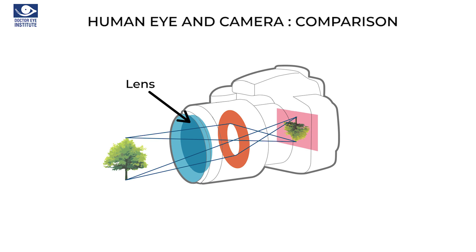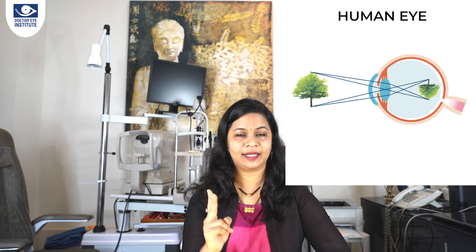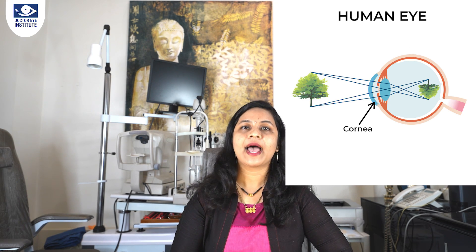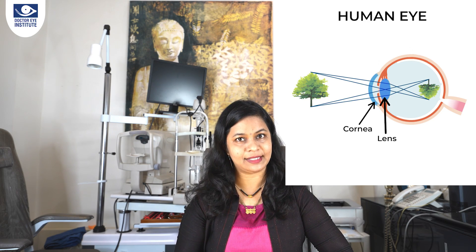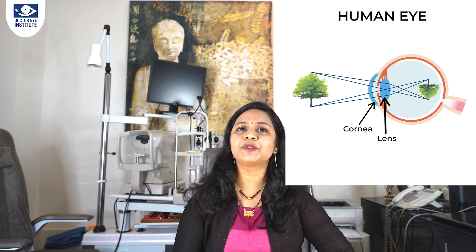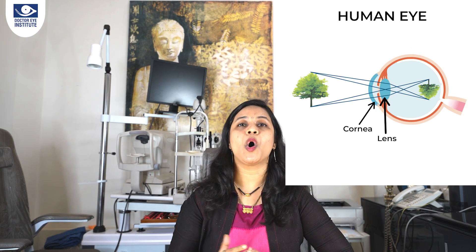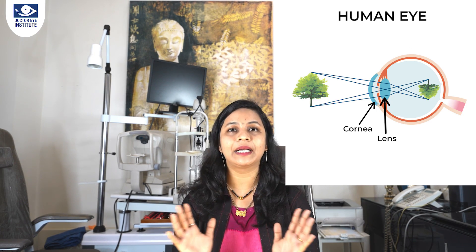Now let me tell you in detail why the cornea is so important. Our human eye is very similar to a camera. As we know, a camera has lenses which help to bend the light coming from external objects and focus it onto either a photographic film or digital sensor. Similarly, our human eye has two lenses: the front transparent part known as the cornea, and the inside crystalline structure known as the lens, and these two together help to focus light from external objects onto the retina to form a clear, sharp image.